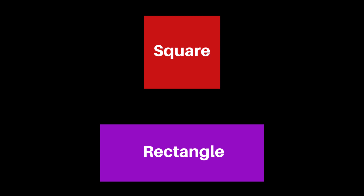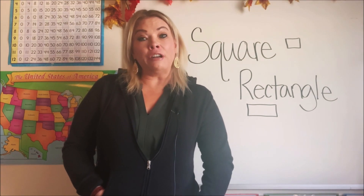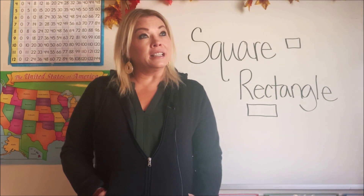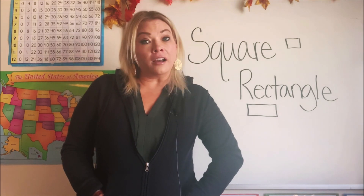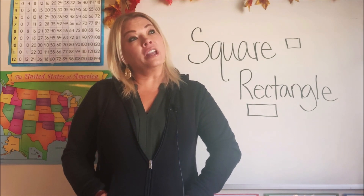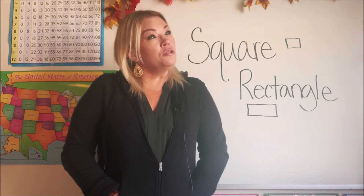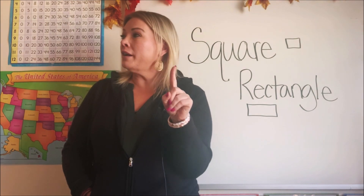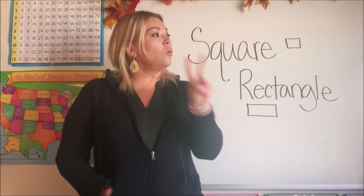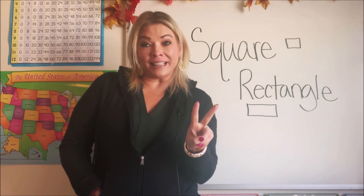A square is smaller than a rectangle. Rectangles are longer and skinnier than a square. I bet if you looked around the room that you're in right now, you would see things that were made out of a square or things that were shaped like a rectangle. Look around your room and see if you can find one thing that looks like a square and one thing that looks like a rectangle.